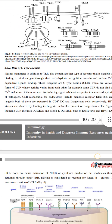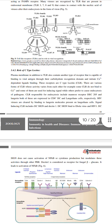Role of C-type lectins. Plasma membranes, in addition to TLRs, also contain another type of receptor capable of binding to viral antigens through their carbohydrates in a Ca2+-dependent manner. These receptors are C-type lectins (CLRs). There are various forms of CLR whose reactivity differs from each other. Some CLRs do not bind Ca2+, some are used for inducing signaling while others prefer to cause endocytosis of pathogens. CLRs responsible for endocytosis include mannose receptor and langerin, expressed on CD8+ DCs and Langerhans cells respectively.